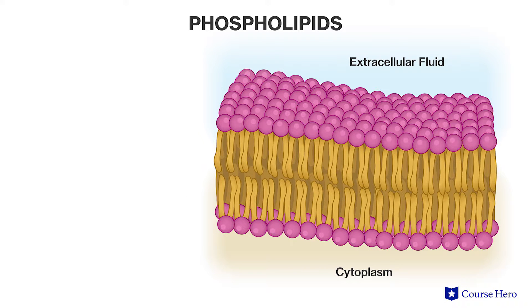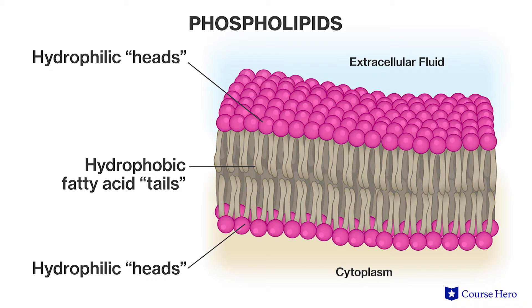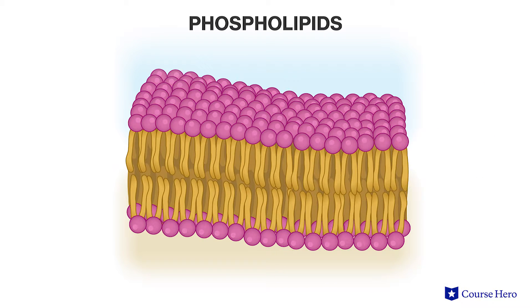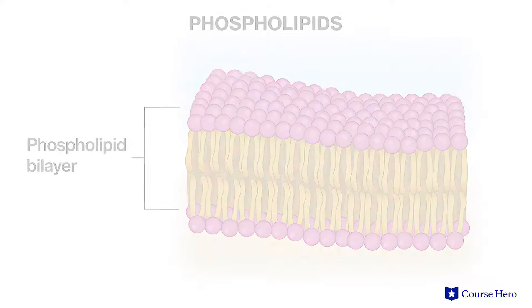Phospholipids found in the cell membrane have two long non-polar tails and a polar head. In the aqueous environment both within and surrounding the cells, two layers of phospholipids line up with the tails toward each other and their heads facing out, forming the phospholipid bilayer. The lipid molecules slide freely past each other within each side of the bilayer, giving the cell flexibility. The lipid molecules can also move to allow substances to pass through the layer, giving the cell permeability.